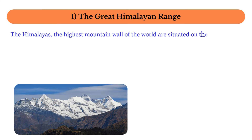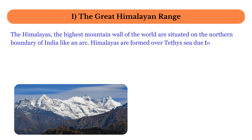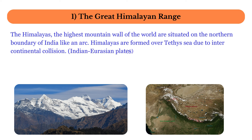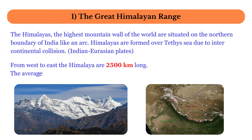The Himalayas, the highest mountain wall of the world, are situated on the northern boundary of India like an arc. Himalayas are formed over the Tethys Sea due to intercontinental collision between the Indian Plate and the Eurasian Plate, which happened around 50 million years ago. From west to east the Himalayas are 2500 kilometers long, and the average breadth is between 250 to 400 kilometers.